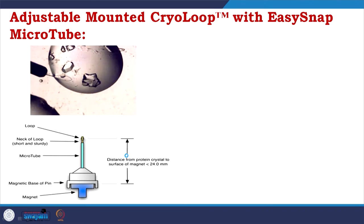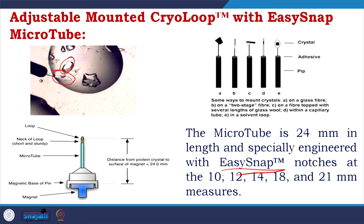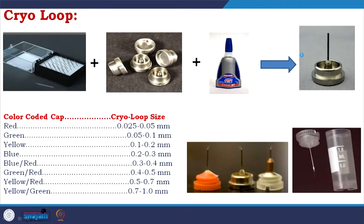The loop picks out the crystal. The microtube is 24 millimeters in length and specifically engineered with easy snap. There are different shapes of loops, and this is where the crystal is captured — you make it with adhesive. This is the way we use cryo loops. You have different loops depending on how big your crystal is, and you get the loop size accordingly.